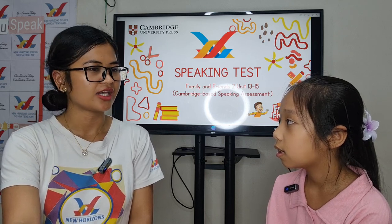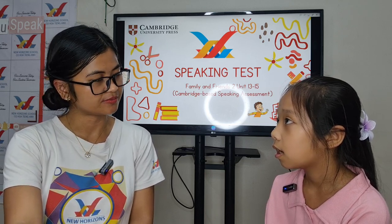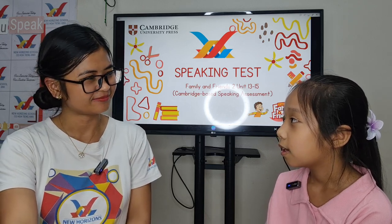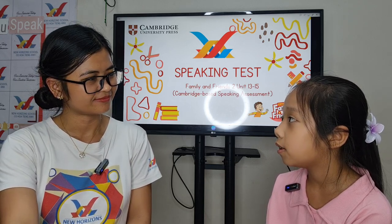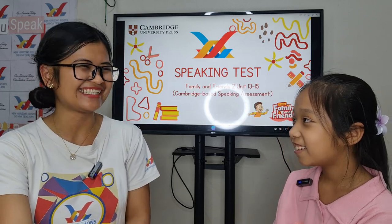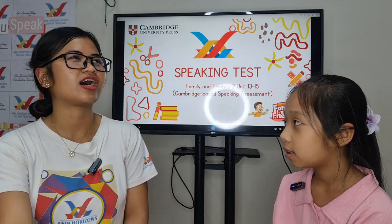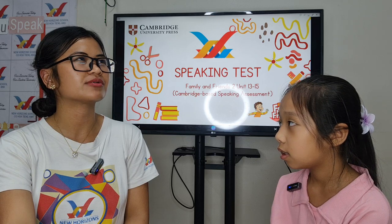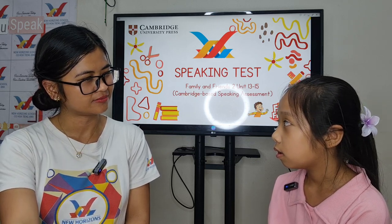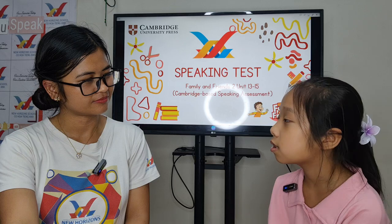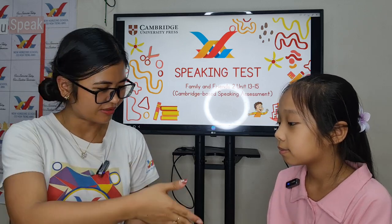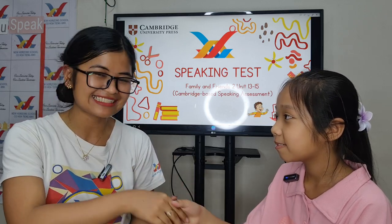And what is your favorite animal? A peacock. Peacock. Why? Because they dance beautifully. They dance beautifully. Now can you tell me what animal is smaller than a peacock? It's a chicken. Chicken. Okay, well done. Thank you so much. That's the end of your speaking test.